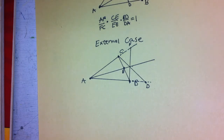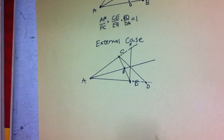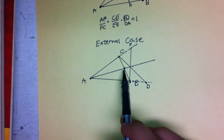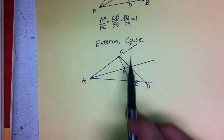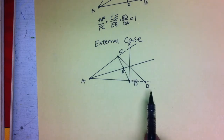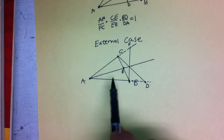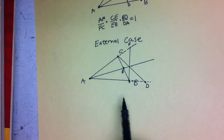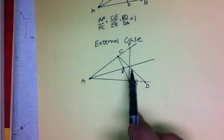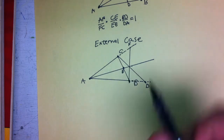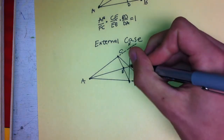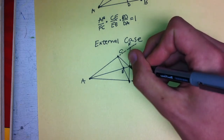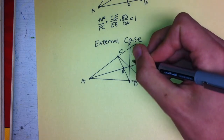We still have the same three lines: line AE, line BF, and line CD. However, this time, instead of intersecting inside the triangle ABC, they're going to intersect over here at some other point that we'll call point G again.